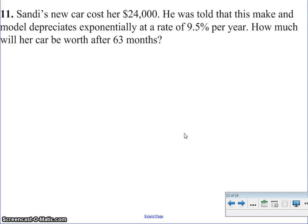All right, let's look at number 11. Sandy's new car cost her $24,000. She was told that this make and model depreciates exponentially at a rate of 9.5% per year. How much would the car be worth at 63 months? So looking at this, first thing we need to remember the equation is y equals a times 1 minus r to the x power.